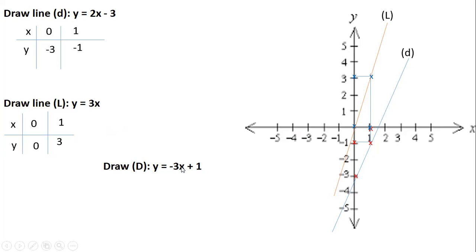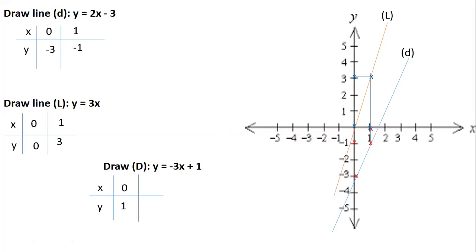For line d: y equals minus 3x plus 1. We draw a table with x and y. Taking x equals 0: minus 3 times 0 plus 1 equals 1, so y equals 1. Taking x equals 1: minus 3 times 1 plus 1 equals minus 2, so y equals minus 2.